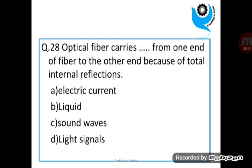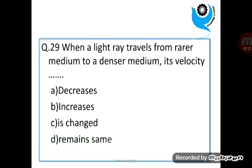Question 28: Optical fiber carries dash from one end of the fiber to the other end because of total internal reflection. Answer: Light Signals. Question 29: When a light ray travels from a rarer medium to a denser medium, its velocity decreases.